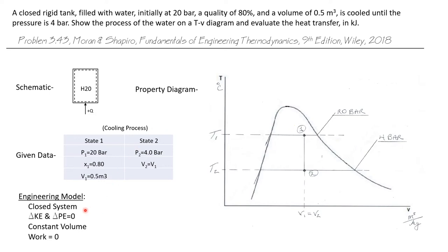We'll model this as a closed system with delta KE and delta PE assumed to be zero. It's a constant volume process, actually a constant specific volume process. And because it takes place in a rigid tank, which has no mechanism for doing work, the work done during this process is also zero. And we wish to find the heat transfer.